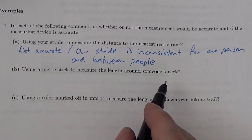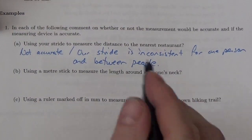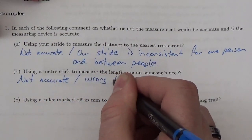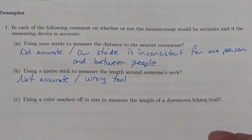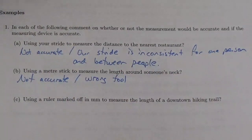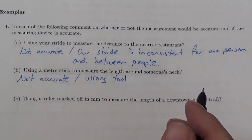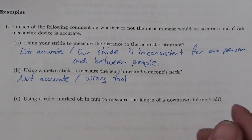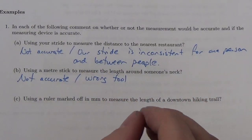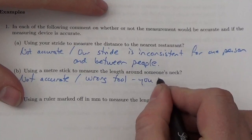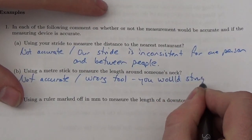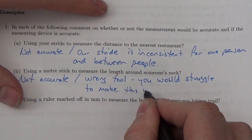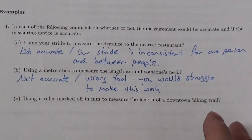Using a meter stick to measure the length around someone's neck — no, that's not accurate. This is the wrong tool. The ruler doesn't conform to the shape of someone's neck; it doesn't wrap around. At best you could get a really rough estimate, but you would struggle to make this work. You could get a number, but I wouldn't trust it.